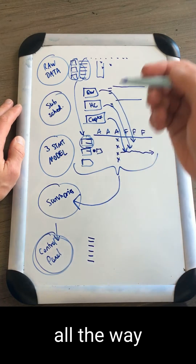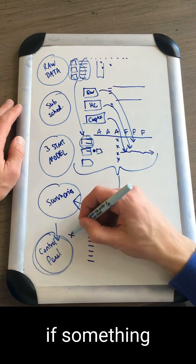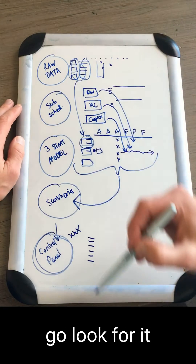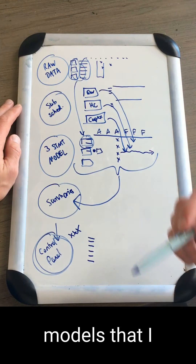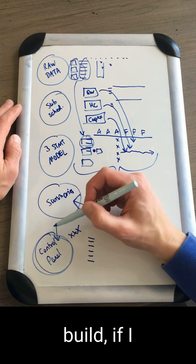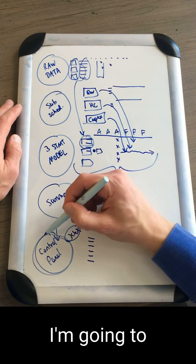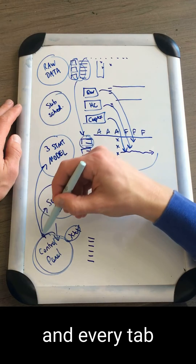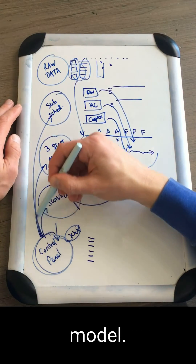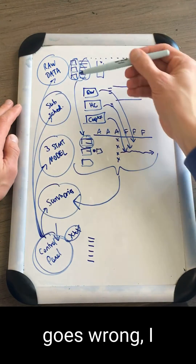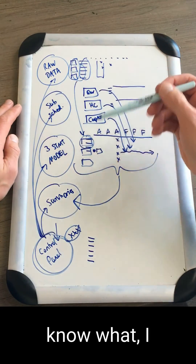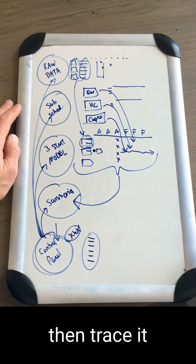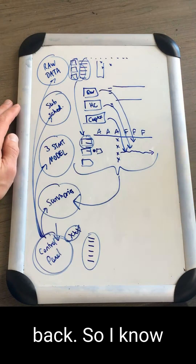Everything flows through to the control panel, so I'm building a consolidated list of possible errors throughout the entire file. That way, if something goes wrong, I can immediately go look for it. In the best models I build, if an error triggers, I link that information to each and every tab in the entire model so the second something goes wrong I can go to the control panel, investigate my error list, and trace it back.